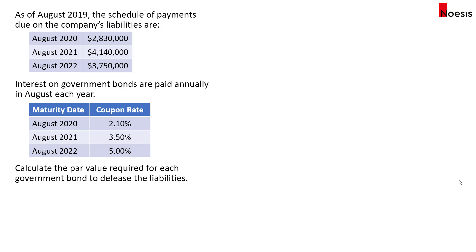In this video we'll look at an example of how the cash flow matching strategy is implemented. As of August 2019, the schedule of payments due on the company's liabilities are: $2.83 million one year from now, $4.14 million two years from now, and $3.75 million three years from now.